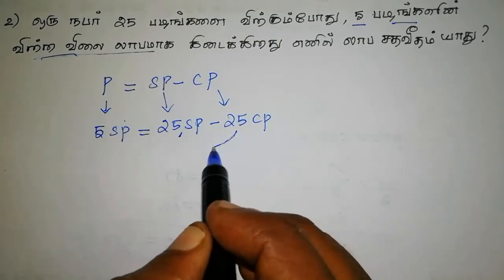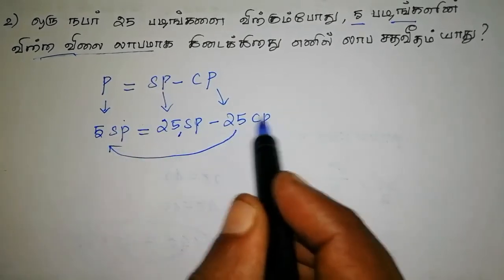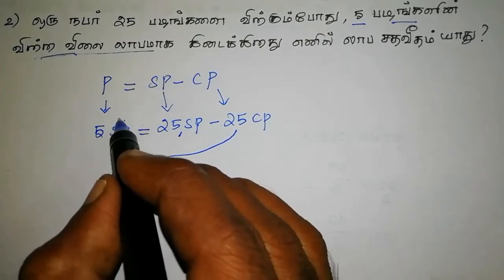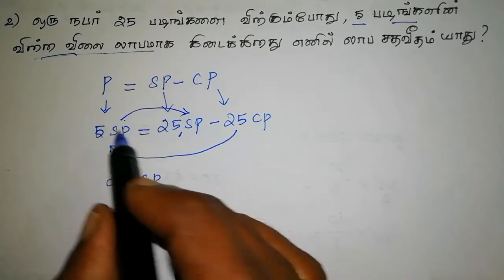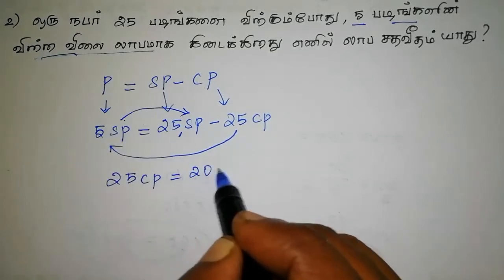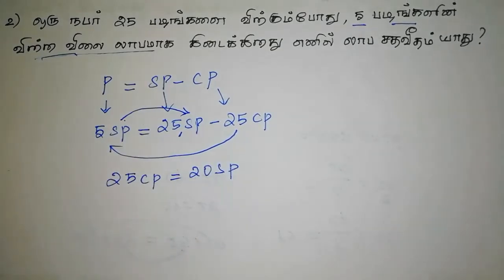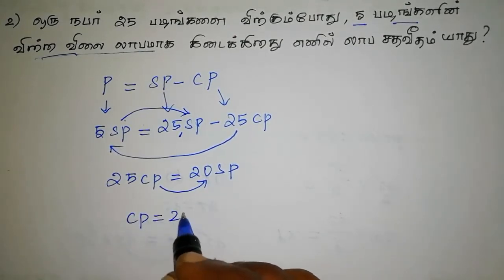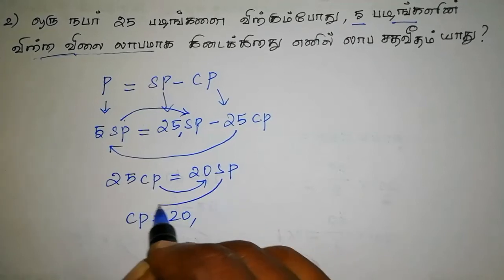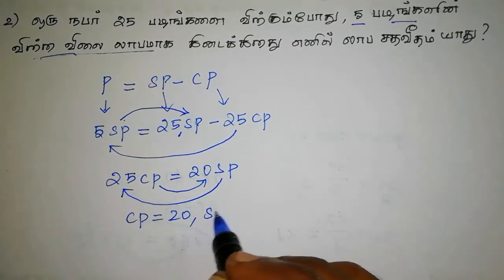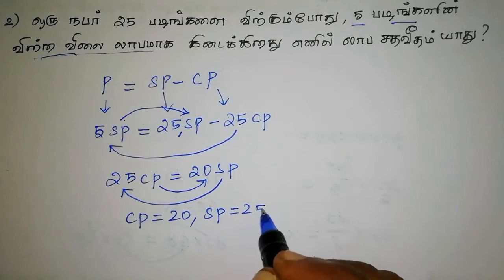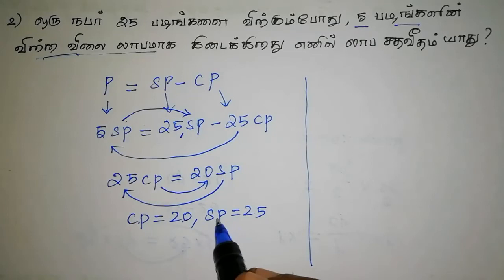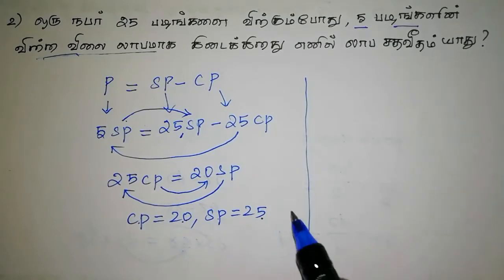The cost price screen is: plus value minus 25 CP, plus 25 CP, plus 5 SP, minus 25 CP — that gives 20 CP. Then 20 CP and 30 CP, 25 CP, which comes to 25 CP. If you come here you can see 20 CP.